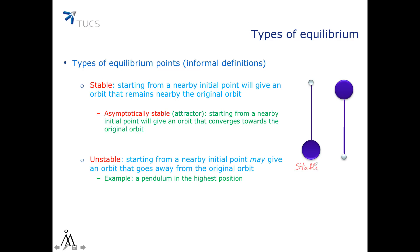An equilibrium point is called unstable if starting nearby it may give a sequence going away from the equilibrium point. A typical example is that of a pendulum in the highest position. If we slightly move the pendulum from this position, either to this direction or to that one, then it's going to swing further and further away from it and will be unable to return to it. So this is an unstable equilibrium point.